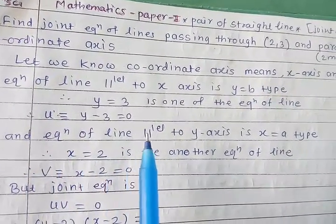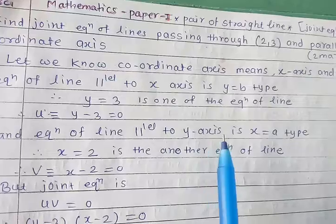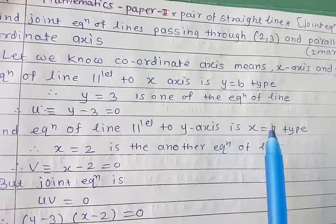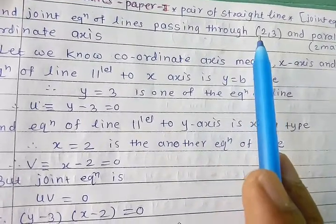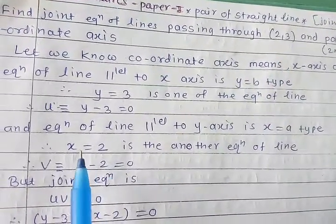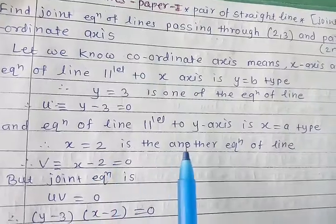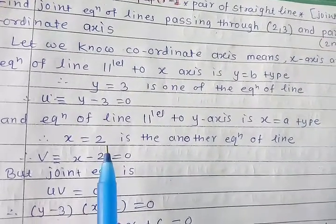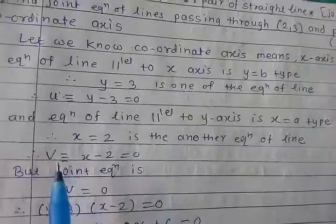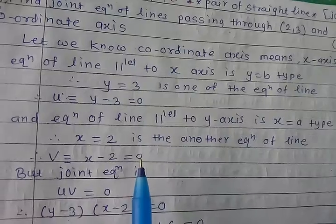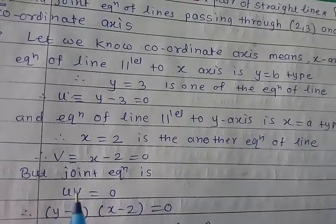The equation of the line parallel to the y-axis is of the form x = a. Here a equals 2, so x = 2 is the other equation of the line. Taking 2 to the LHS, we get v: x minus 2 equals 0.